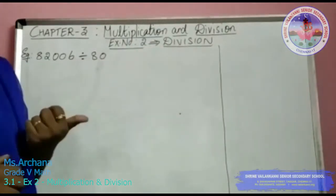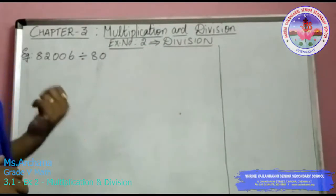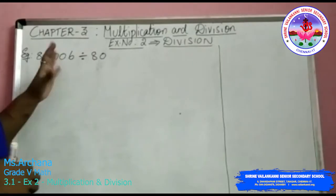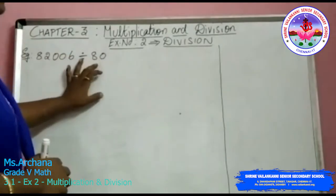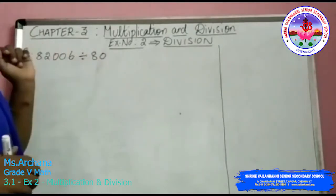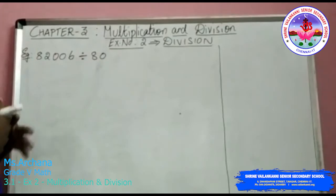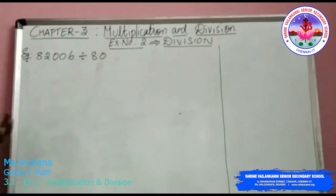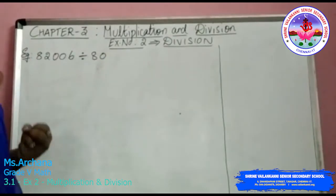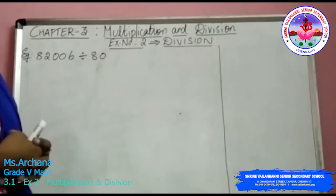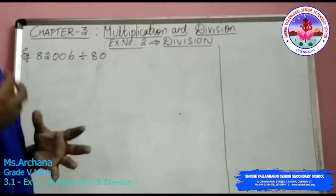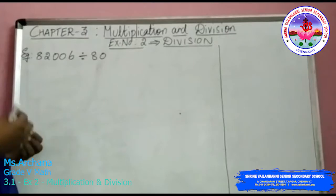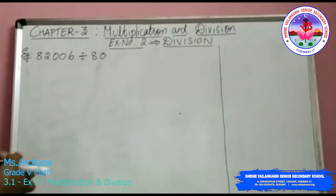So in Exercise 1, you saw how to do multiplication with 3-digit numbers. So here we are going to see how to do division with 2-digit numbers. In the course channel, in detail, you would have seen and learnt and done many sums — how to do division with 1 digit, 2 digit, and how to do with remainder, without remainder, and all.